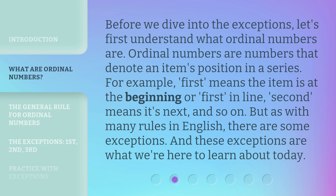Before we dive into the exceptions, let's first understand what ordinal numbers are. Ordinal numbers are numbers that denote an item's position in a series. For example, 'first' means the item is at the beginning, or first in line. 'Second' means it's next, and so on. But as with many rules in English, there are some exceptions — and these exceptions are what we're here to learn about today.